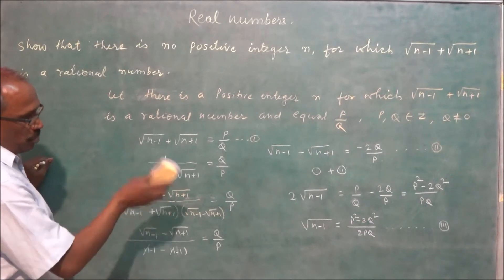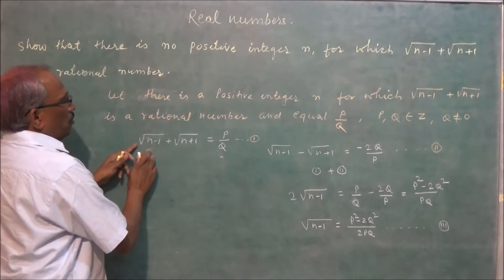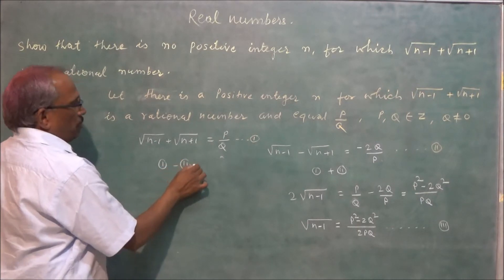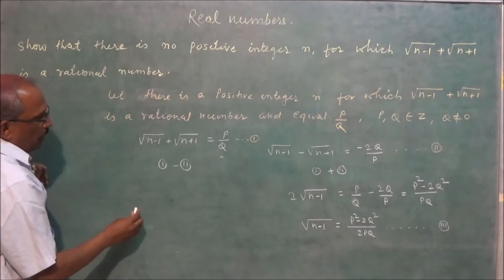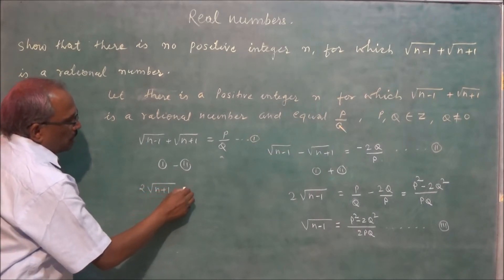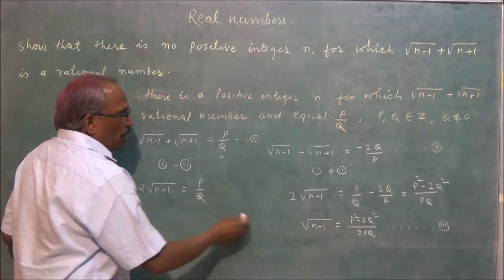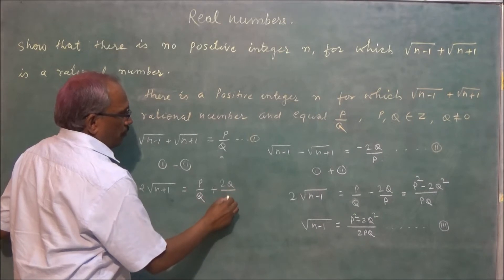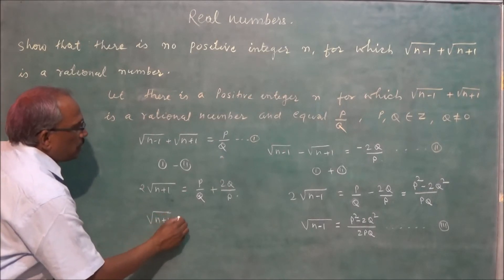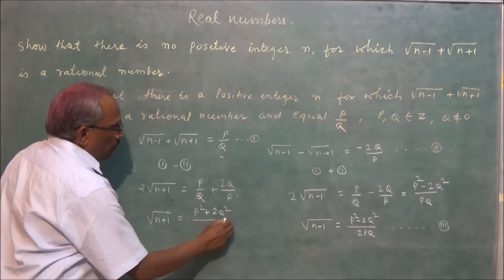Equation number 1 minus equation number 2: after cancellation, 2 times under square root n plus 1 equals p squared plus 2q squared upon 2pq. Call this equation number 4.